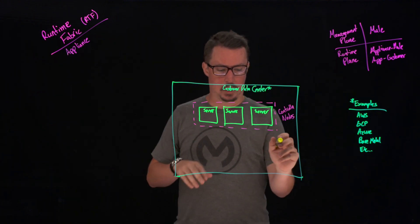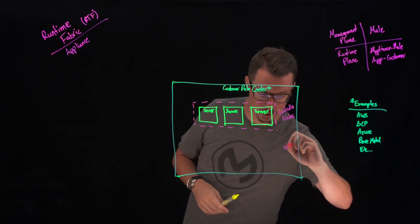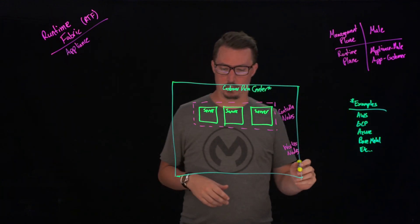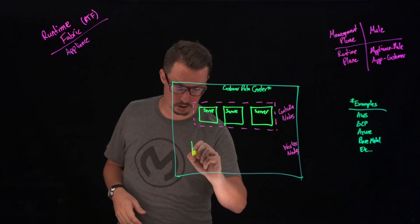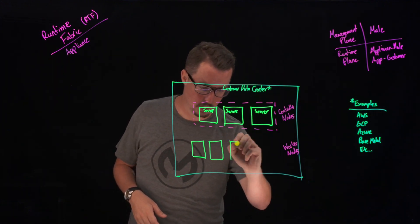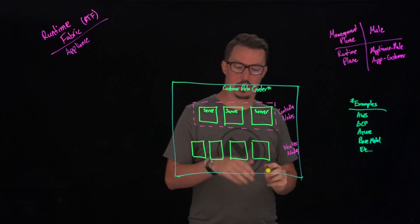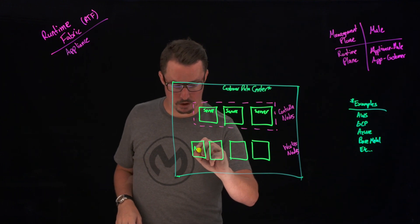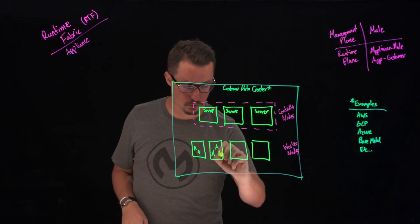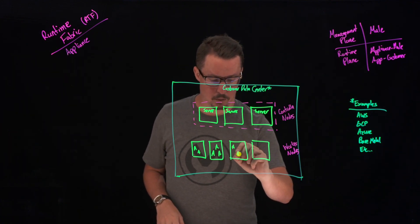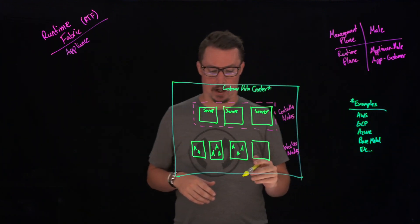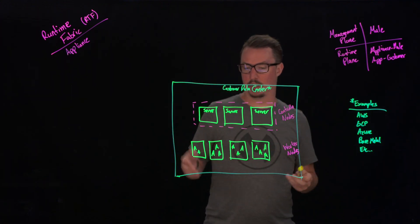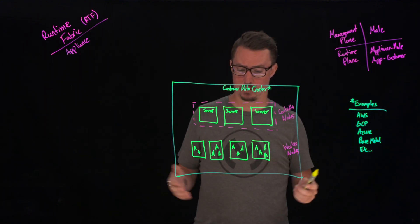The next thing we want to talk about are what we call our worker nodes. These nodes are where our actual applications are going to run. There's a limit of about 16 different nodes that you can have. You can have less than that, but you can't have more. Each one of these is where we're actually going to be deploying our applications, and you can deploy a fairly large number of applications on each node. There is a limit, but it's mostly going to be determined by the actual horsepower — the amount of CPU and memory — you have available on those individual servers.